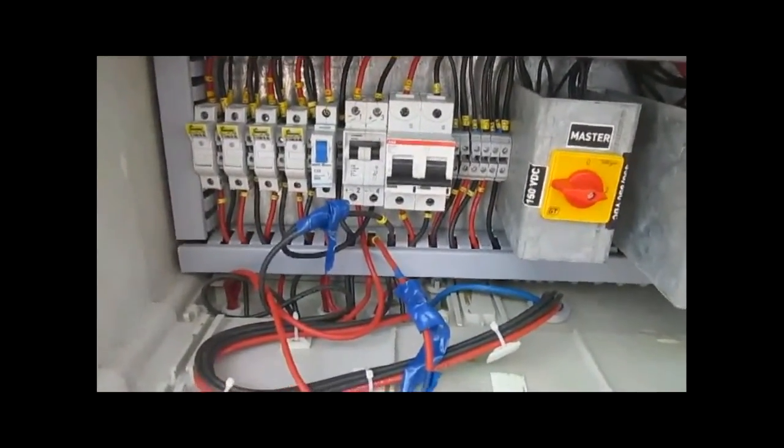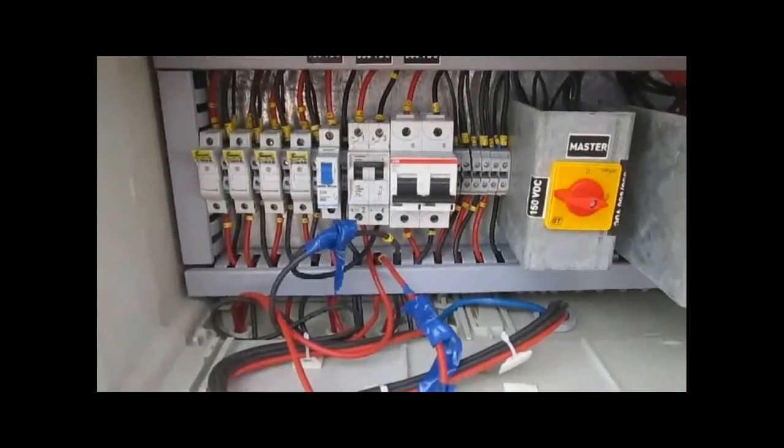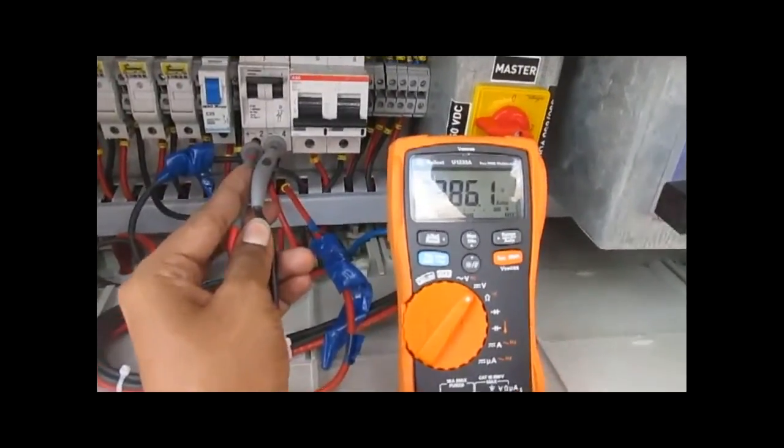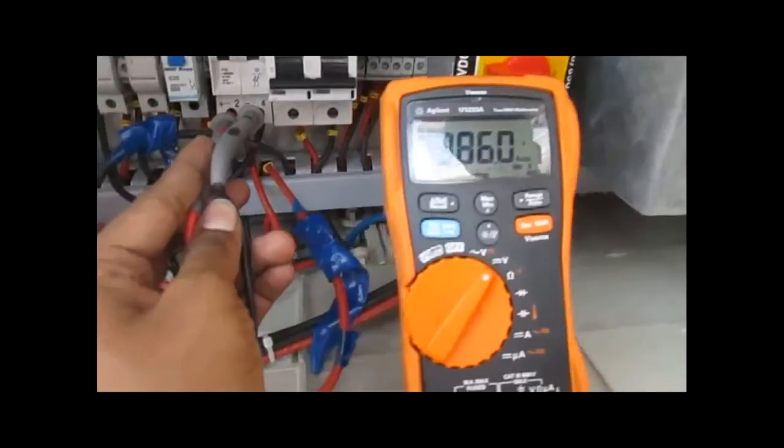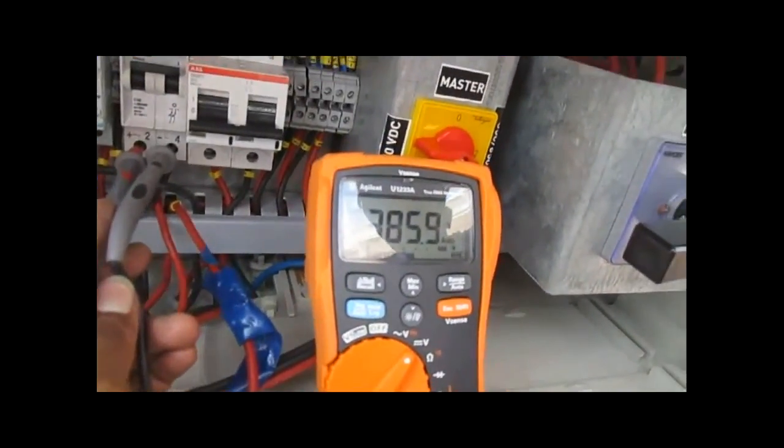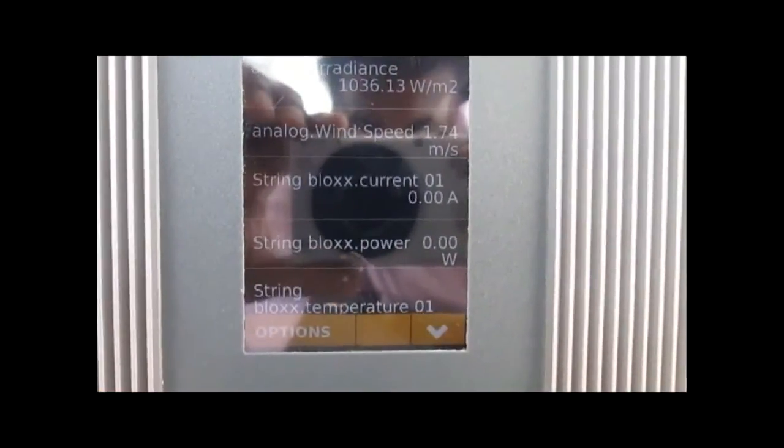The open circuit voltage for the 2.4 kW PV system is 380V DC which you are watching right now. You are also watching the irradiation, analog wind speed as well as the temperature.